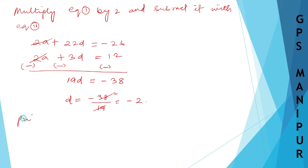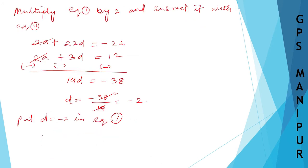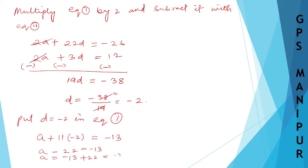Now put D equals minus 2 into equation number 1. So A plus 11 times minus 2 equals minus 13, giving A minus 22 equals minus 13. Therefore A equals minus 13 plus 22, which equals 9. We got the value of A is 9.